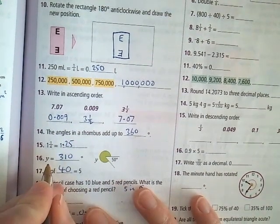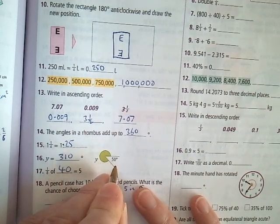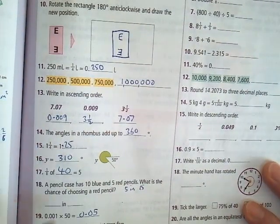Number 16. Y equals - well, a full circle is 360 degrees. This is 50 degrees taken out of 360 degrees. So 360 take away 50 is 310. Y is 310 degrees.